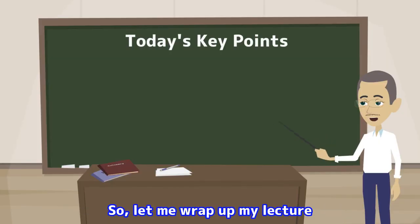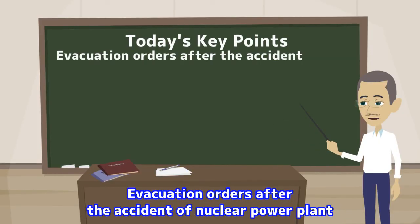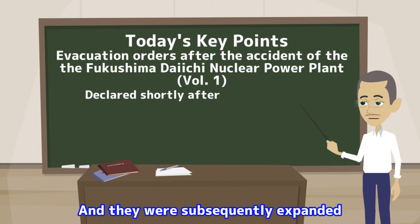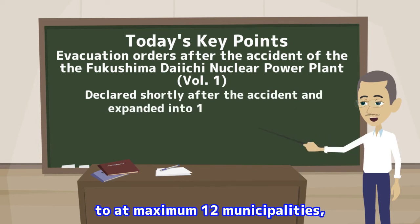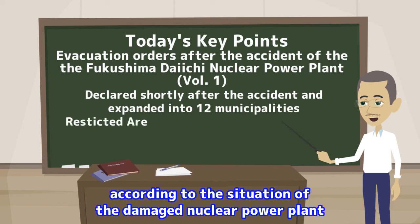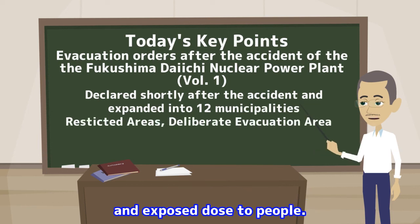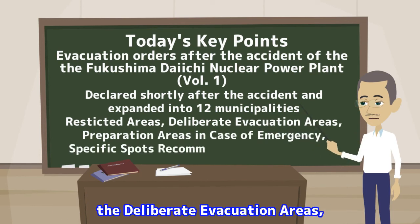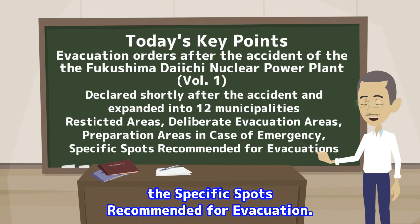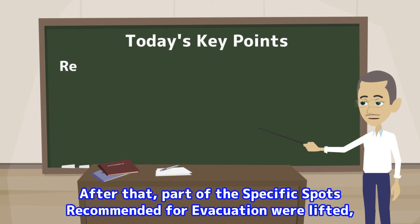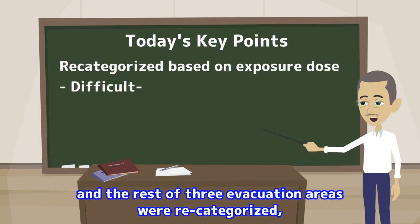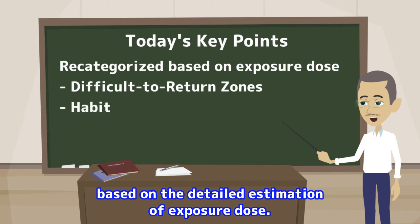Let me wrap up my lecture by providing you the key points. Evacuation orders after the accident of the nuclear power plant were declared shortly after the accident and were subsequently expanded to a maximum of 12 municipalities, according to the situation of the damaged nuclear power plant and the exposed dose to people. Specifically, they were the restricted areas, the deliberate evacuation areas, the preparation areas in case of emergency, and the specific spots recommended for evacuation. After that, part of the specific spots recommended for evacuation were lifted, and the rest of the three evacuation areas were re-categorized based on the detailed estimation of exposure dose.